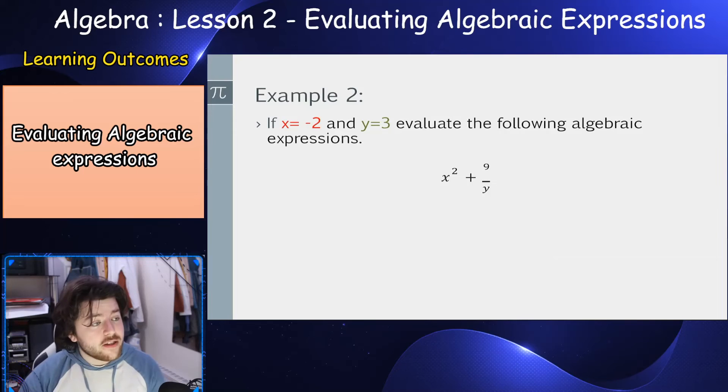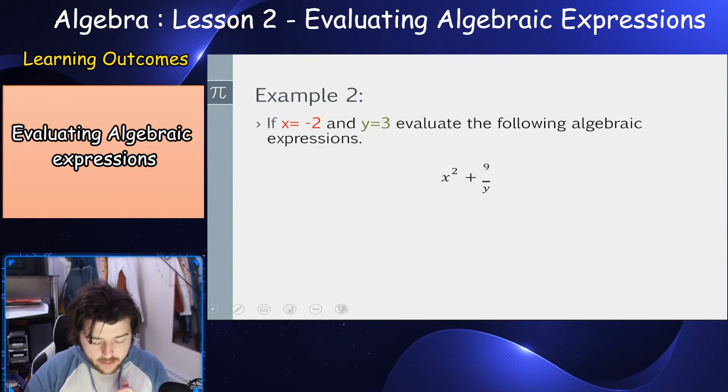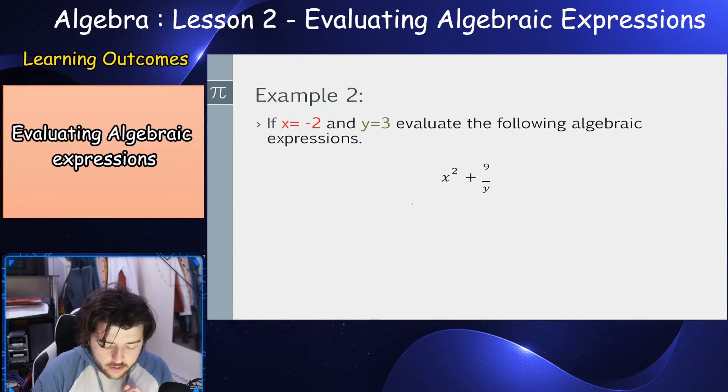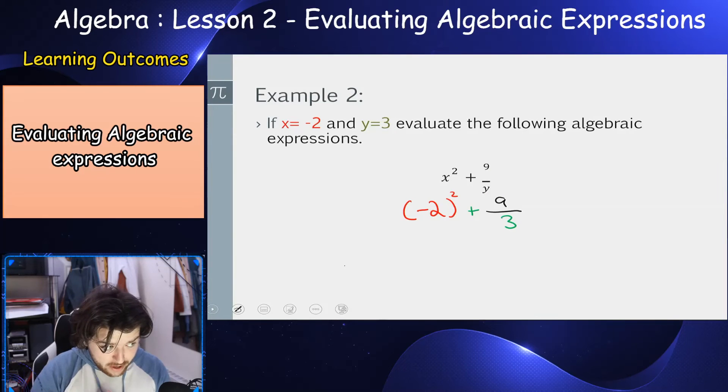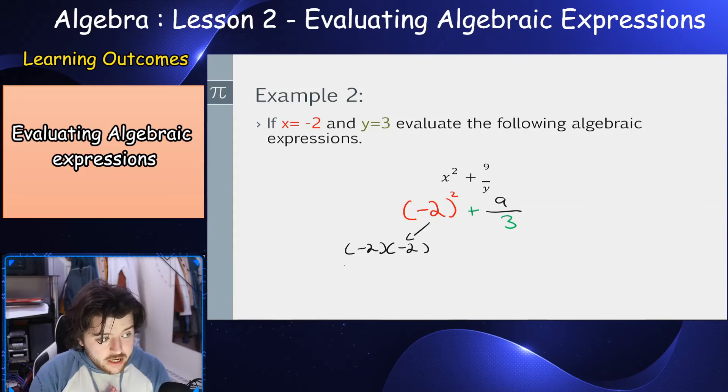If x is equal to minus 2 and y is equal to 3, evaluate the following algebraic expression. We have x squared plus 9 over y. Remember the squared means multiplying by itself. So I have minus 2 squared plus 9 all over y. And y is equal to 3. So minus 2 squared, remember that's the same as minus 2 multiplied by minus 2. And remember our rule, minus by a minus is equal to a plus.